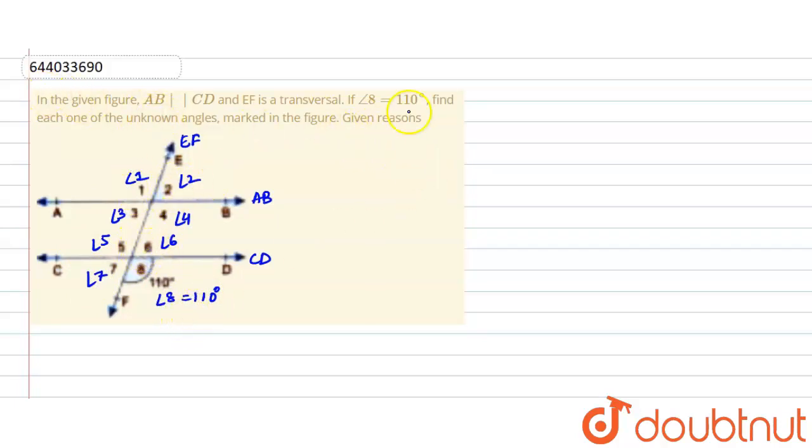So for doing that, first of all we see that angle 1 is equal to angle 5, angle 2 is equal to angle 6, angle 3 is equal to angle 7, and angle 4 is equal to angle 8, because they are corresponding angles. Since they lie on the same side of the transversal and on the same side of the parallel line, therefore they are equal.